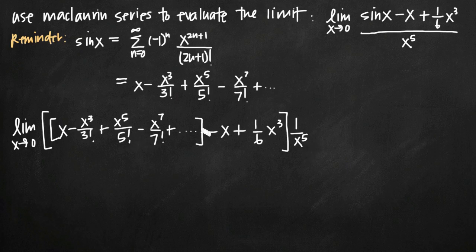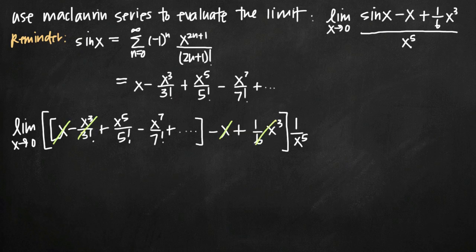Now you can really start to see why this is helpful. We have a positive x term from the sine series and a negative x term, so those two cancel — x minus x goes to zero. We also have negative x cubed over 3 factorial, and since 3 factorial is 6, that's negative x cubed over 6. We have positive x cubed over 6 as well, so these two values cancel as well.